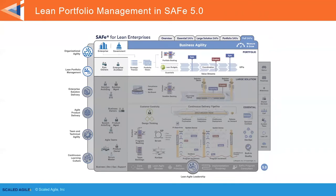Just to point out a few things that have changed on the big picture: instead of Portfolio Canvas, it now says Portfolio Vision, with two icons representing current and future state Portfolio Canvas. An exciting change is that we can now document strategic themes using OKRs, giving us a measurable way to determine whether we're making progress. We've also updated the Portfolio Canvas, added a new portfolio roadmap, made the coordination article more explicit, and introduced a revised lean business case and revised epic hypothesis.